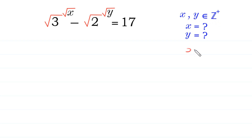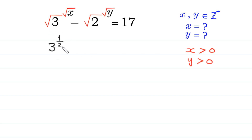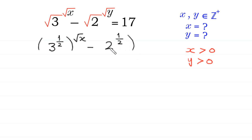It means x is greater than 0 and y is greater than 0. We can write square root of 3 as 3 to the power 1 over 2, whole to the power square root of x, minus we can write square root of 2 as 2 to the power 1 over 2, whole to the power square root of y, is equal to 17.